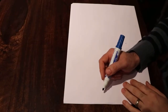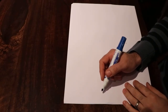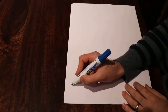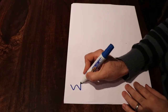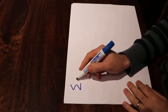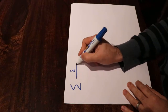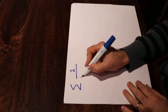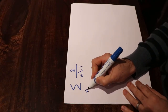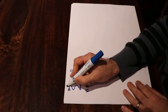Hello, today I'm going to show you how to determine whether the following series is divergent or convergent. That is the sigma 2 divided by n² minus 1, when n changes from 2 to infinity.